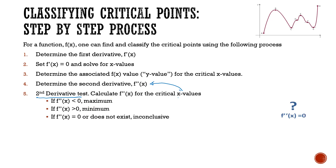There's one more possibility. Sometimes our second derivative is going to be equal to zero, or alternatively there is no value for it — it's inconclusive. In this case, we don't know what's happening. It could be a saddle point, it could be a maximum, or it could be a minimum. So we have to investigate further to determine what that critical point is.